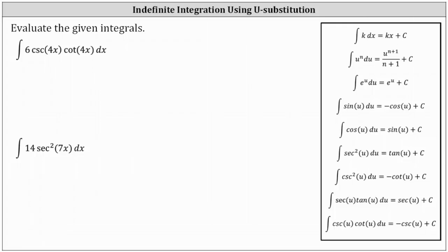We're asked to evaluate the given indefinite integrals. The directions may also say determine the antiderivatives. First, we have the integral of 6 cosecant 4x times cotangent 4x dx. If we look at our basic integration formulas, there is an integration formula for the integral of cosecant x times cotangent x dx, which is equal to negative cosecant x plus c. But in this case, notice how the input is 4x, not just x, which means we will need to perform u substitution.